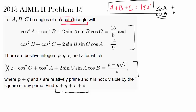Since we have expressions with cosine of A, sine of A, sine of B, and so on, we may need to simplify cosine of C and sine of C in terms of A and B. So instead of having three variables, we only look at two variables A and B.